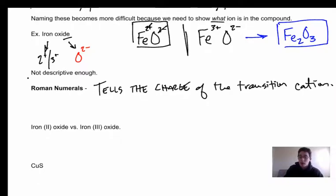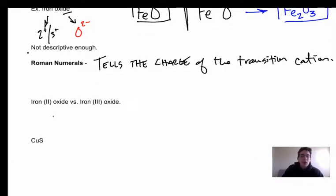The roman numeral doesn't tell you how many there are, but it tells you the charge of the ion that is part of that compound. So now we consider we have iron(II) oxide versus iron(III) oxide. The iron(II) tells me that my iron is a 2+ ion, and if I have an oxygen that's 2-, now this is electrically neutral and we have FeO. This is iron(II) oxide.